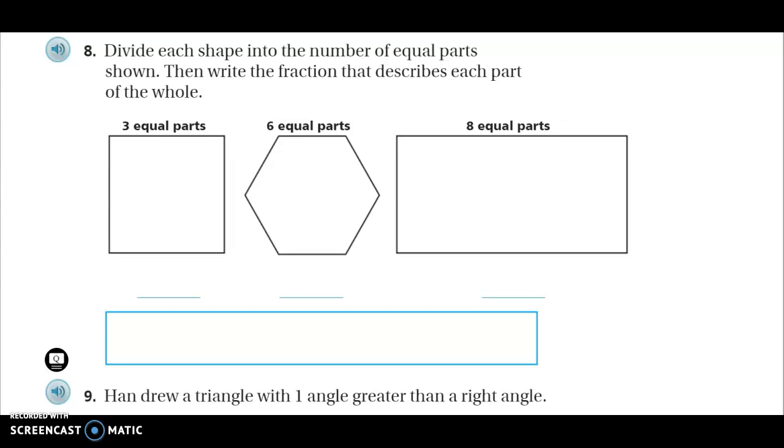Number eight. Now remember, make sure that you are pressing pause and actually doing the work and not just waiting for me to go over everything. I'm not going to go over any of these till part two. So make sure that you are doing the work yourself. That's the most important thing. Divide each shape into the number of equal parts shown. Then write the fraction that describes each part. So the square making three equal parts. Hexagon making six equal parts. The rectangle making eight equal parts. Then write the fraction that describes each part of the whole. I'm talking about unit fractions the other day. Press pause and work.